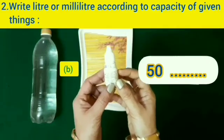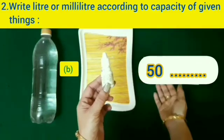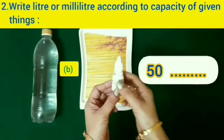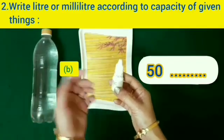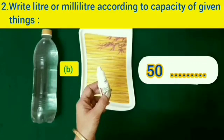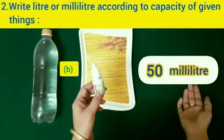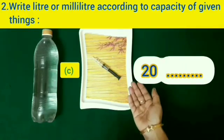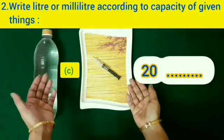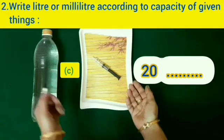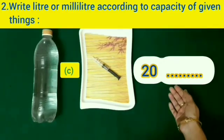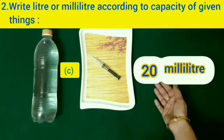Now look at this eyedropper — it is very small, so we cannot write liter for it as we use liter for large quantities. Comparing it with the water bottle, we write milliliter. The syringe is also small in size and cannot hold one liter of water, so we will write milliliter for it as well.